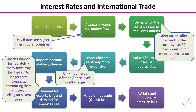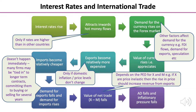Demand for exports falls and demand for imports rises. What we have to remember here is that this doesn't happen immediately — there's a time lag. Many firms are tied into longer-term contracts committing them to buying or selling for several years, and those contracts can't just be broken, so this doesn't just occur overnight. Finally, when our logic chain says the value of net trade — exports minus imports — falls, that depends upon the price elasticity of demand for exports and imports. If exports are price inelastic, then the rise in price should actually increase revenue from exports.